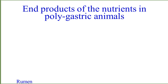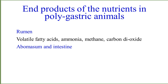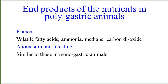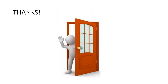The end products of nutrients in polygastric animals include volatile fatty acids, ammonia, methane, and carbon dioxide produced in the rumen. However, in the abomasum, the end products are similar to those in monogastric animals: carbohydrates convert into glucose, proteins into amino acids, and lipids into fatty acids. So in the rumen, volatile fatty acids, ammonia, methane, and carbon dioxide may form, while the abomasum and intestine produce end products just like in monogastric animals.